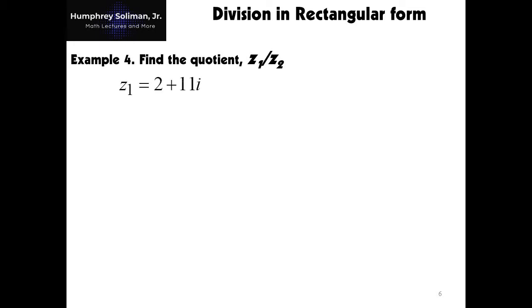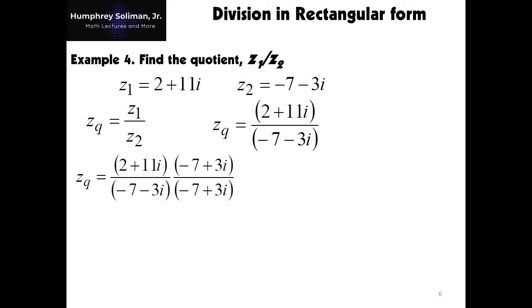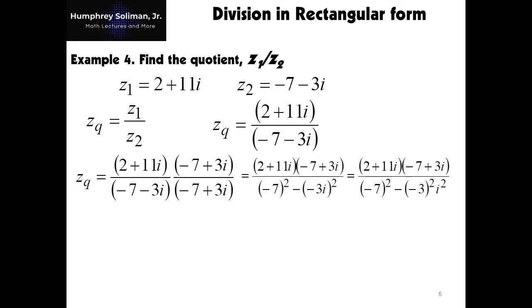Now, division of complex numbers using the rectangular form. We have here example number 4, with the same given as our previous examples: z1 equals 2 plus 11i, and z2 equals negative 7 minus 3i. We will call the quotient of z1 over z2 as zq. Our first step is to multiply the numerator and the denominator by the conjugate of z2. This will give us a real number for the denominator of zq.